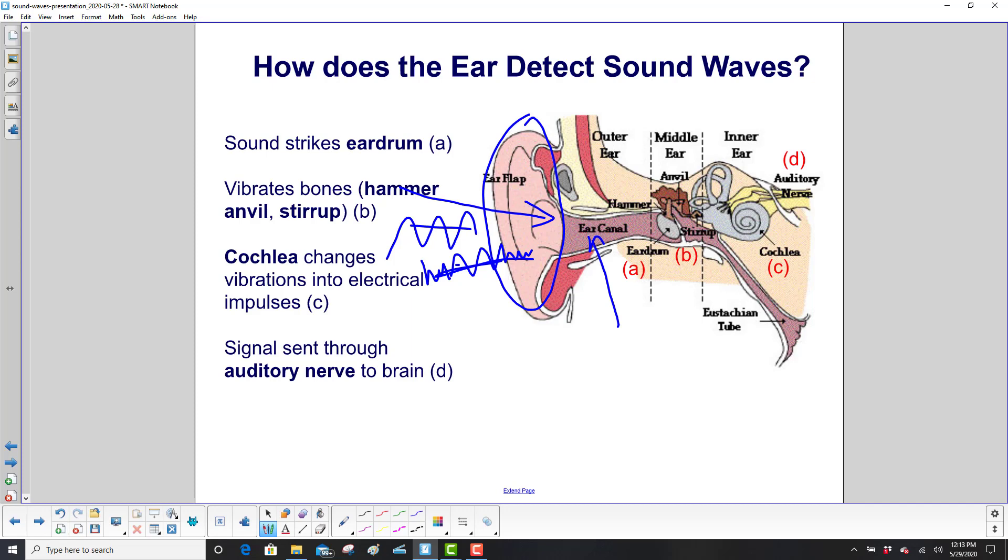It goes through the ear canal and hits the eardrum. The eardrum vibrates, and that vibrates these really tiny bones in here. The anvil, stirrup, and hammer.